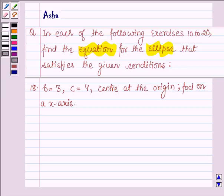find the equation for the ellipse that satisfies the given condition. Problem 18: b equals 3, c equals 4, center at the origin, and foci on the x-axis. So let's start with the solution.